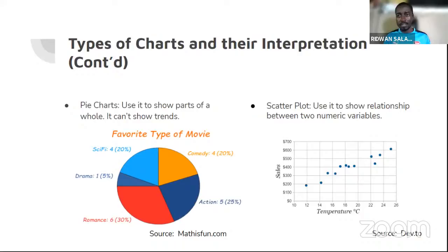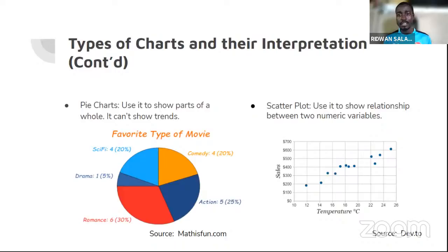Scatter plots are very useful for showing relationships between numerical variables. If you are a data analyst, machine learning engineer, or data scientist, it's especially useful when exploring data to identify useful features for analysis. By plotting two quantities together in a scatter plot, you get an intuition as to whether there's any relationship or if the data is just random.